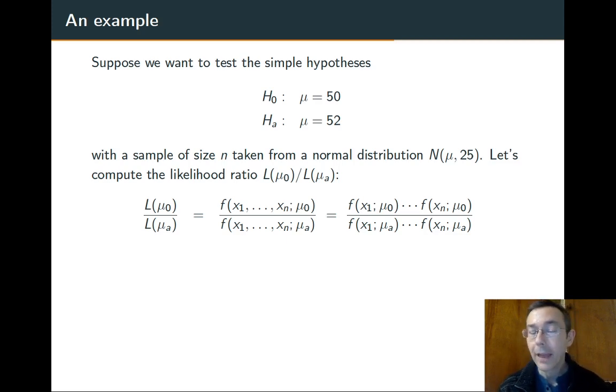So as I said, the likelihood function is the joint PDF viewed as a function of the parameter, in this case μ. Bear in mind that the joint PDF is talking about identically distributed independent random variables. So the joint PDF can be written as a product of the individual PDFs.